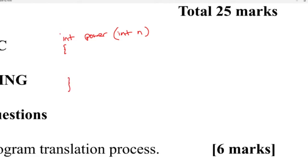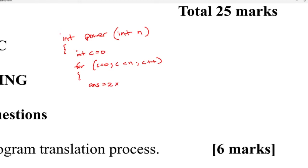We need a for loop to iterate: for c equals zero, c less than n, c plus plus — because n is the number of times we want it to run. We create a variable called answer to store the result. Answer equals two times answer, so we multiply by two each time. We start answer at one — if n is one, the loop runs once, one times two equals two, which is 2 to the power 1.